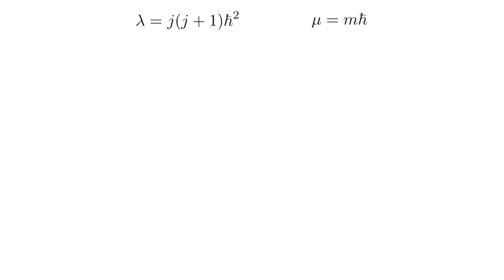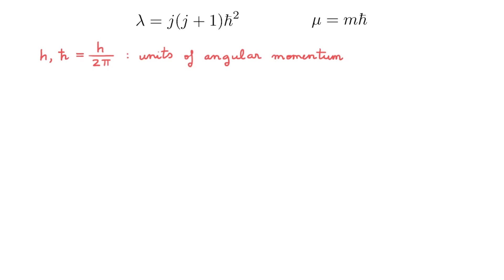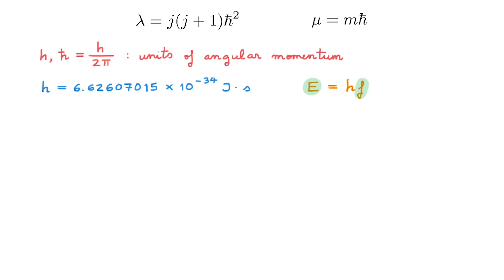Let's start with a sanity check and confirm that these eigenvalues have the correct units for an angular momentum. The key insight is that Planck's constant, and similarly the reduced Planck constant, both have units of angular momentum. Planck's constant is a fundamental physical constant which since 2019 is defined to have the exact value h = 6.62607015 × 10⁻³⁴ joules·seconds in SI units. Historically, Planck's constant was the proportionality constant between the energy and the frequency of a quantum of light, called a photon. You can check that the units of energy (joules) and those of frequency (inverse seconds) lead to the units of h being joules·seconds.